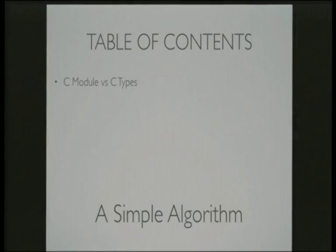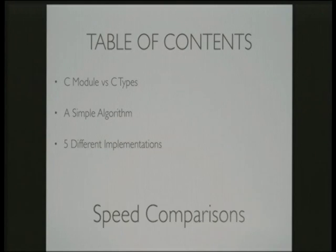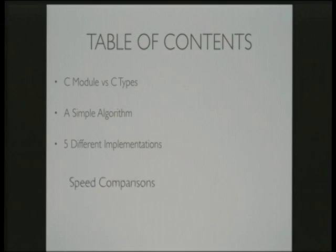I'll just run through some of the things I'll be covering. I'll start off by comparing the differences between the two main ways of integrating with C: building a C module or using ctypes. For an example, I'll use a simple algorithm and implement it in five different ways to contrast and compare the different methods. And finally, I'll look at some speed comparisons between those implementations.